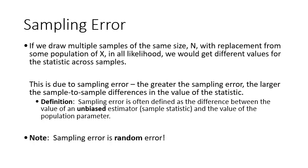You are never or rarely ever going to get the exact value of your population from your sample because of sampling error. Sampling error is often defined as the difference between the value of an unbiased estimator — unbiased means no systematic error — and the value of the population parameter. The difference between your sample statistic and your population parameter is sampling error, and sampling error is random error. That's an important concept — I will probably ask a question from this slide on part A of the exam.